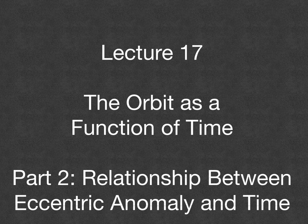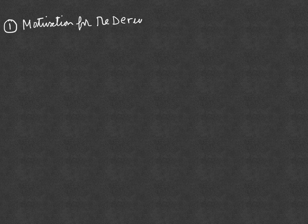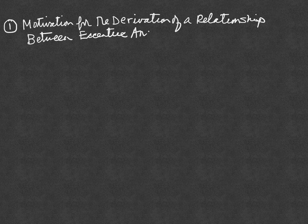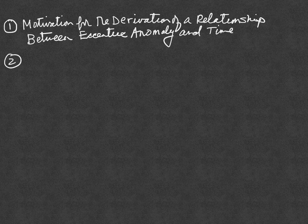The objective of this lecture is to provide the second part of the study of the orbit as a function of time. This lecture focuses on the relationship between eccentric anomaly and time on an orbit. The lecture is organized as follows: first, we provide a motivation for the derivation of a relationship between eccentric anomaly and time. Then we derive the key results, which are called Kepler's equation.